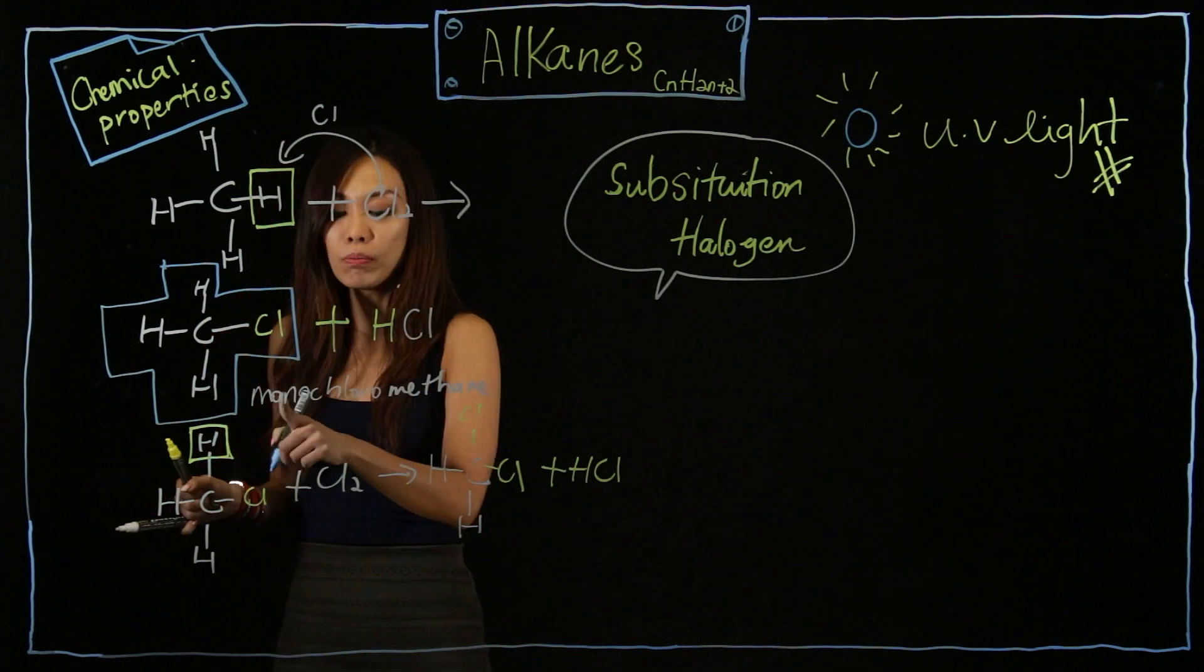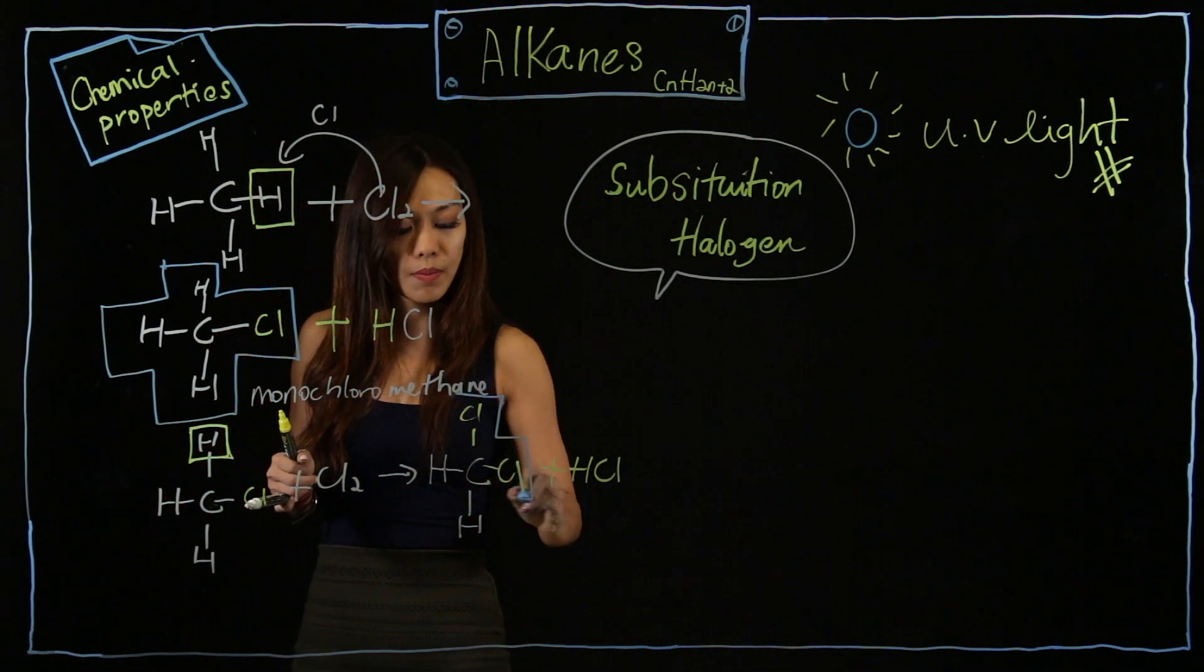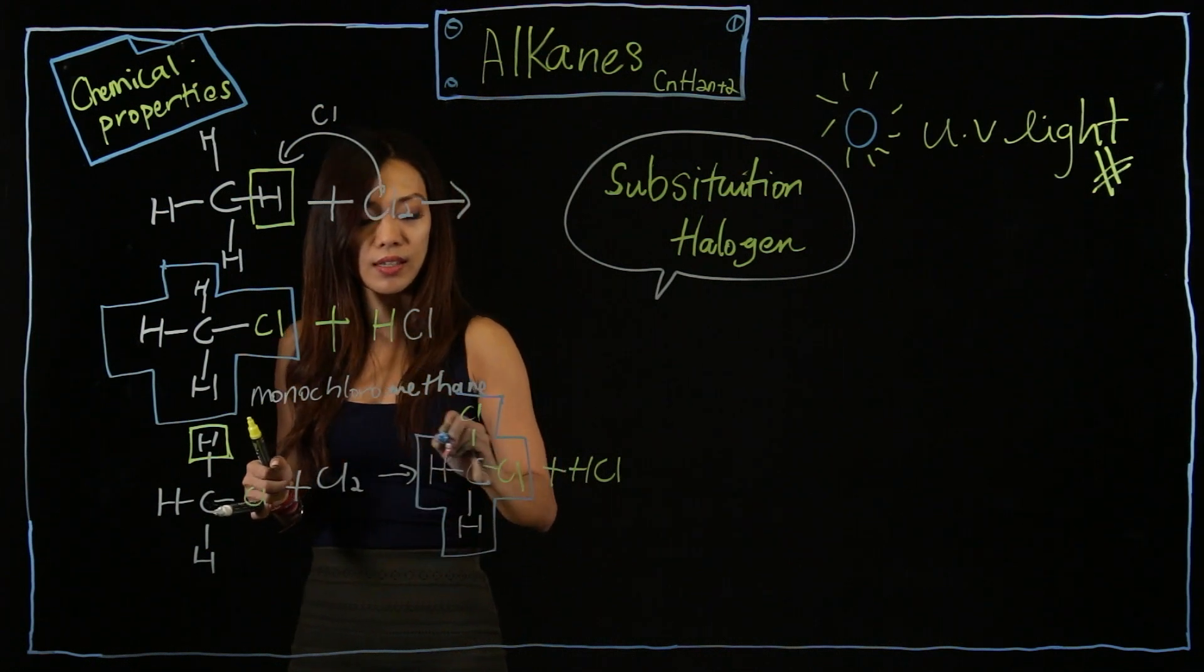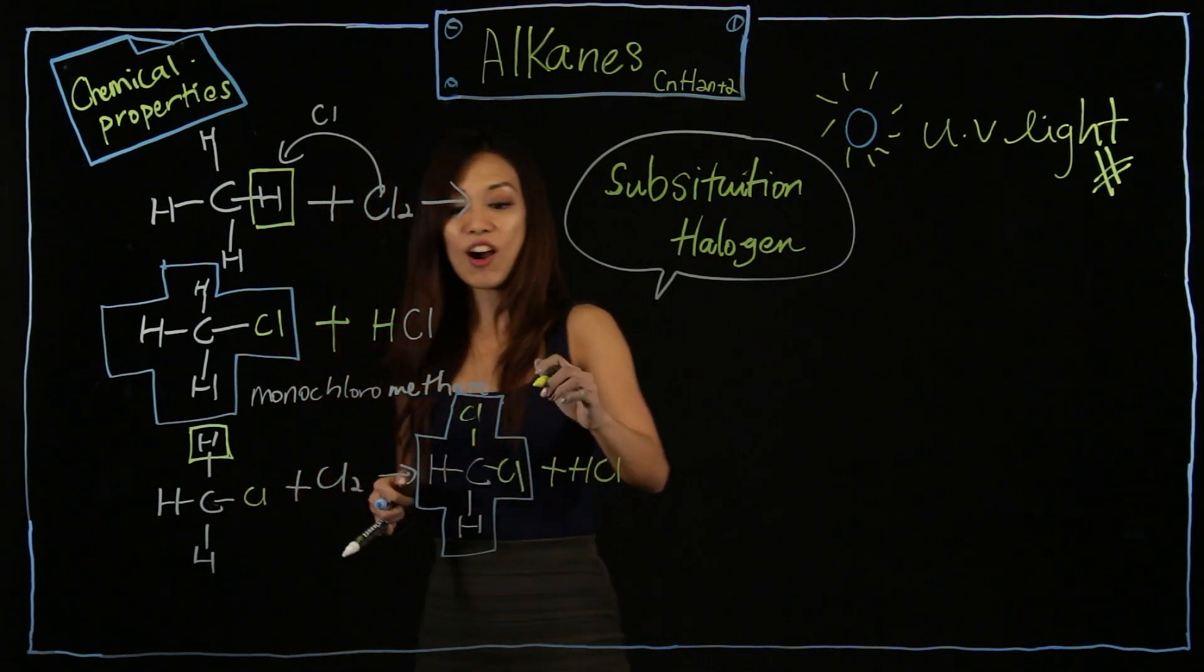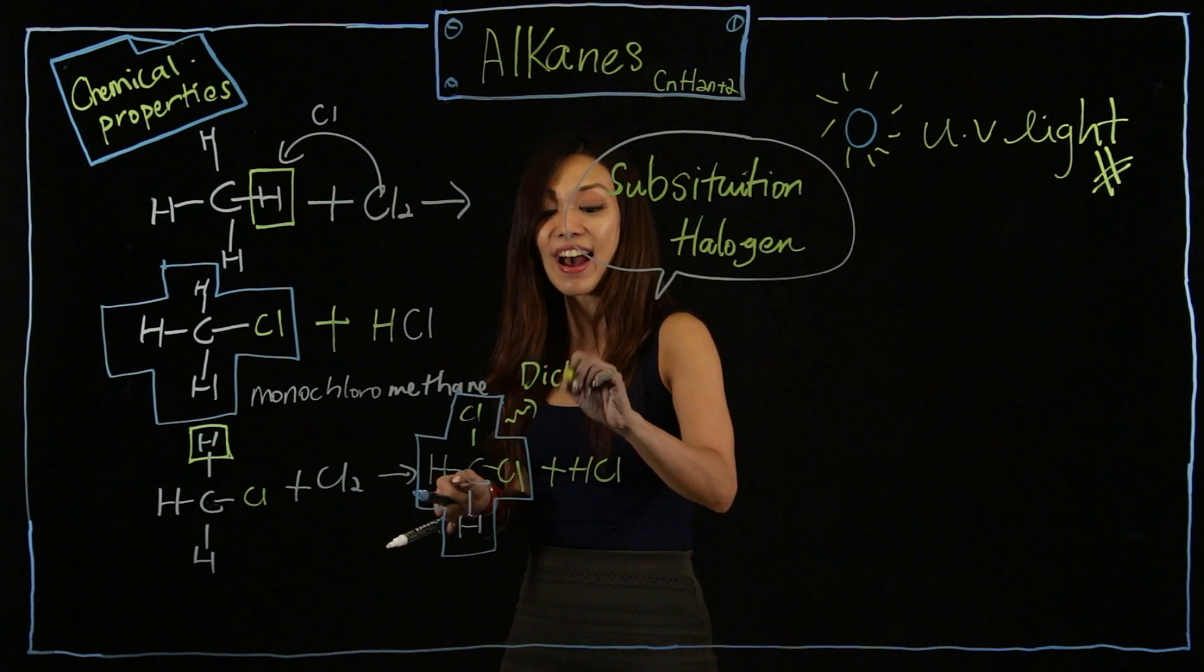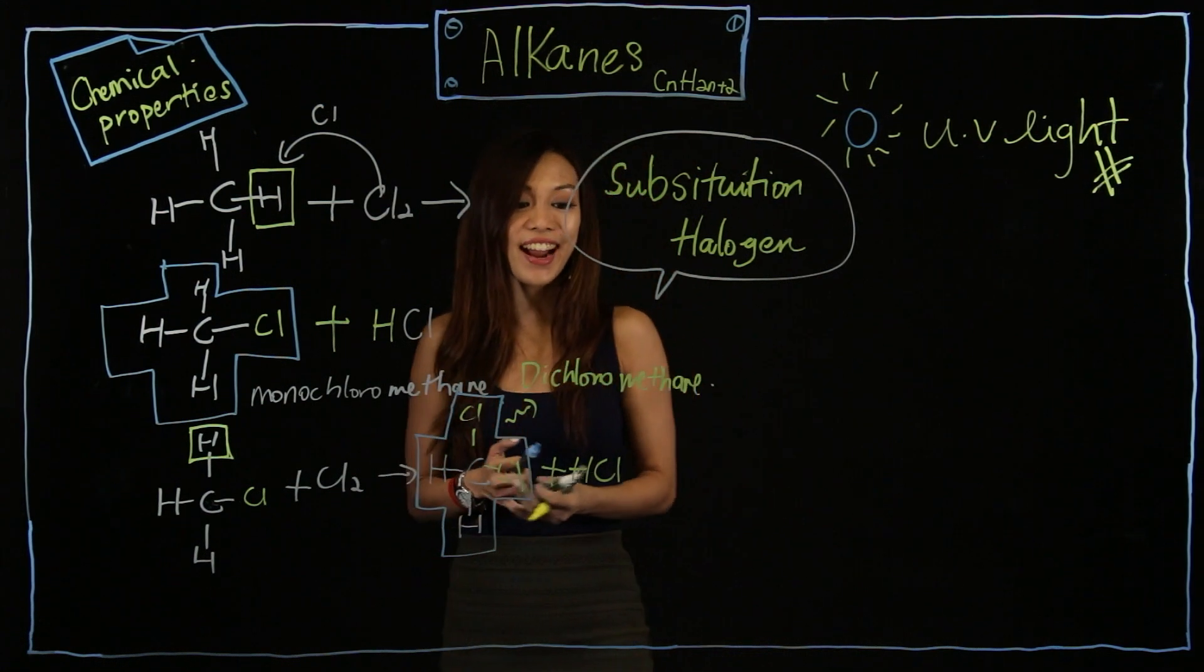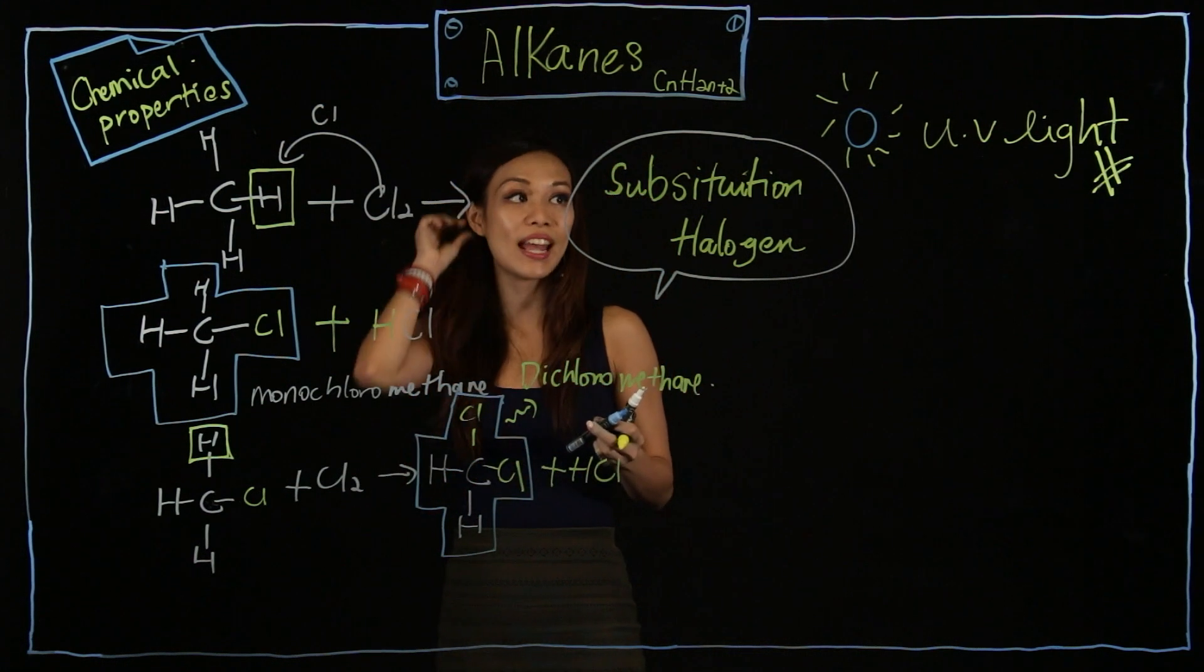Just now, with one, I'm called monochloro. So those of you that are watching, give me a guess. What do you think this is? I have two Cl now. Very good. Some of you say di, yes, dichloromethane. Chloro, because it's chlorine. Methane because the main structure is methane.